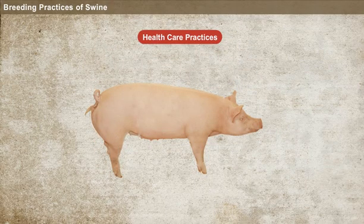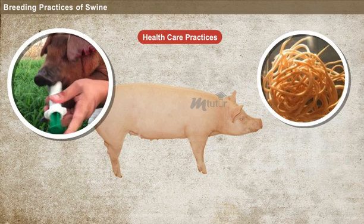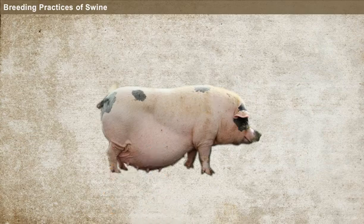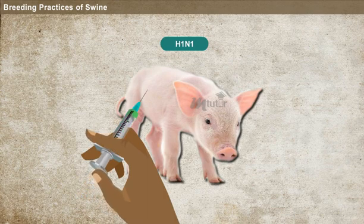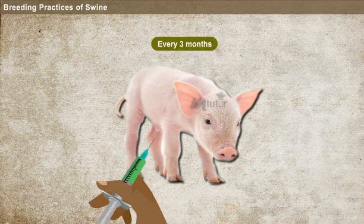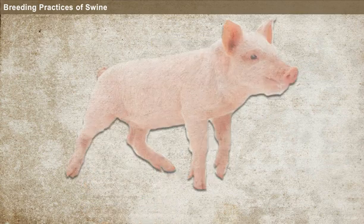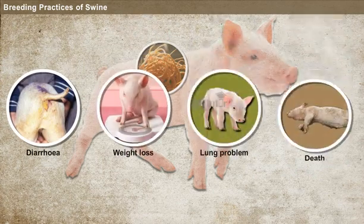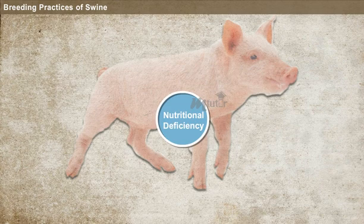Healthcare practices. Adult pigs can be infected with a number of worms, which results in poor weight gain. Hence, deworming should be regularly done. The pregnant sow should also be dewormed to avoid infection of the litter. At the age of two months, all newborn piglets must be vaccinated for swine fever. Piglets should be dewormed repeatedly once every three months. Young pigs infected by roundworms can suffer from diarrhea, weight loss, lung problems, and this can also result in the death of the piglets.